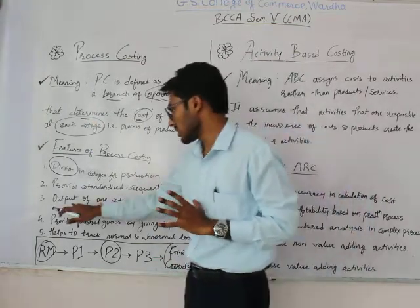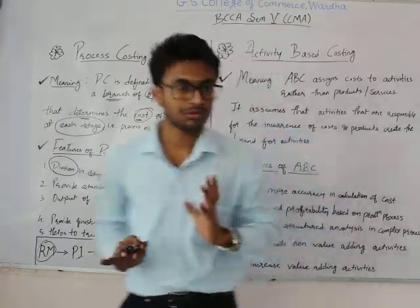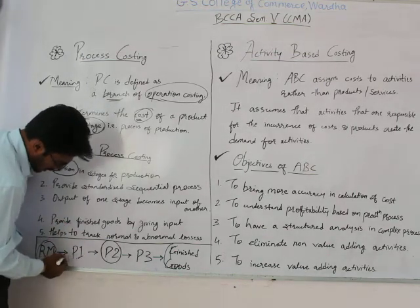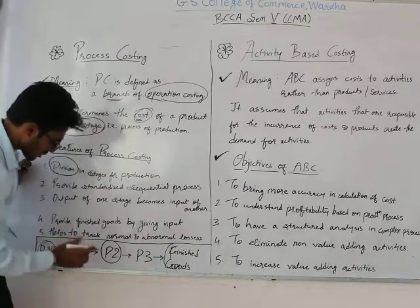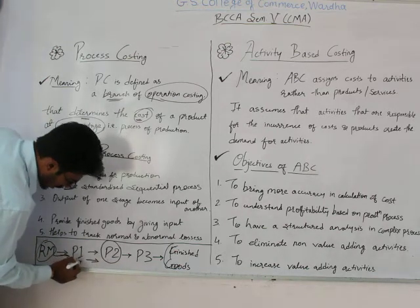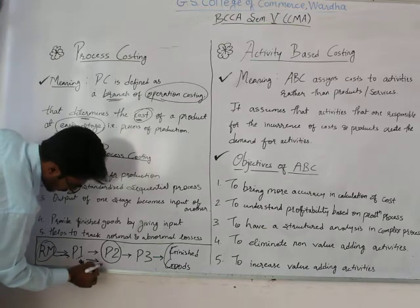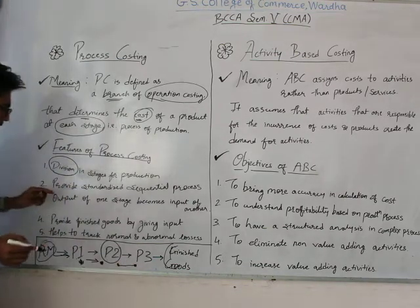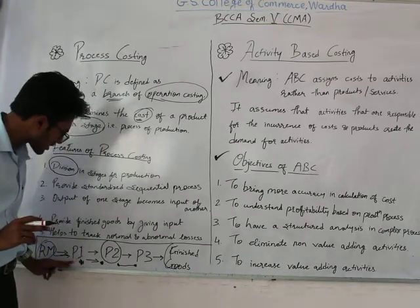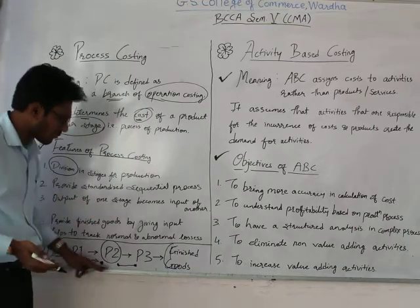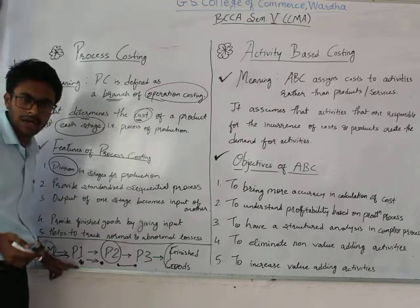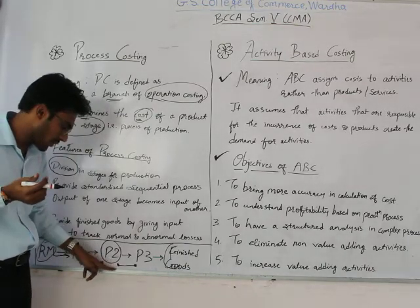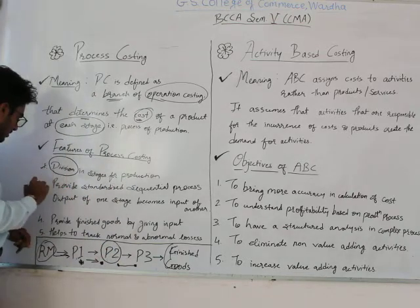The third feature is that the output of one stage becomes the input of another. If raw material is provided to P1 and P1 processes it, the output is sent to P2. The closing stock of P1 becomes the opening of P2, and the closing stock of P2 becomes the opening of P3.